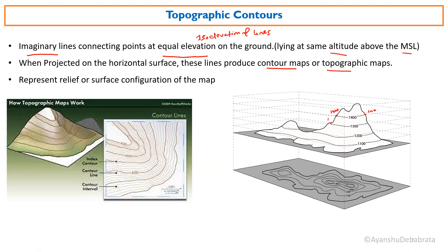These lines are called contour lines. In the central part of the map the highest elevation is 1400, surrounded by 1300, then 1200 — each forming its own loop. When you project these 3D contour lines onto a horizontal surface, the result is called the topographic map. The characteristics of contour lines will be more clear in the next slides.